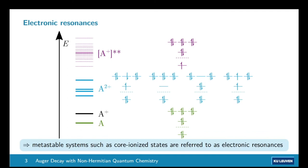The problem with Auger decay: unlike bound states which are straightforward for quantum chemistry, the core-ionized state is so highly excited that its energy is higher than the corresponding dicationic states. Over time the system can lose an electron while losing energy — it's a so-called electronic resonance. Because it's not a bound state but an unbound state, it is not a solution of the time-independent Schrödinger equation; it's a collection of continuum states that cannot be described by standard bound-state quantum mechanics.